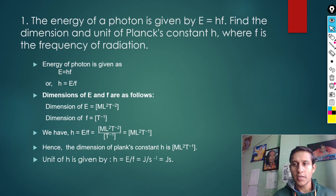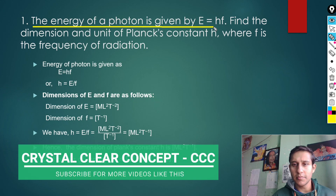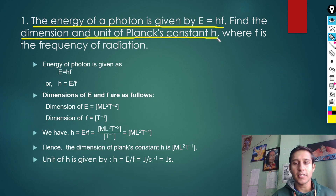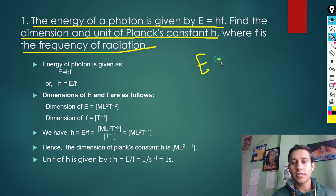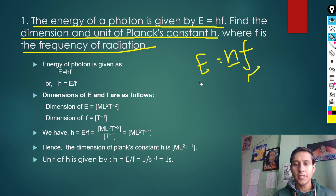So the first question: today we will solve five short questions. The first question is: the energy of a photon is given by E = hf. Find the dimension and unit of Planck's constant h, where f is the frequency of radiation. We all know this formula E = hf, where h is Planck's constant, f is frequency, and E is energy.